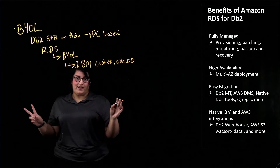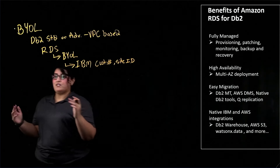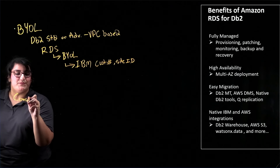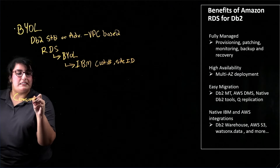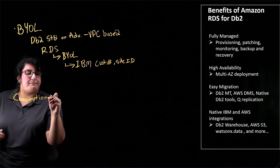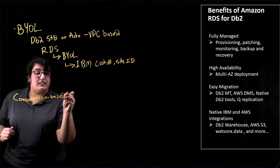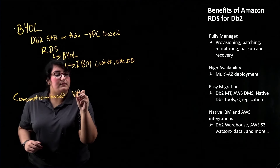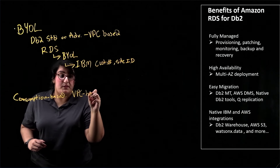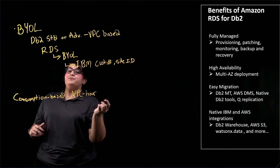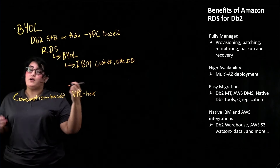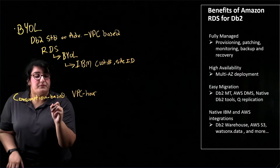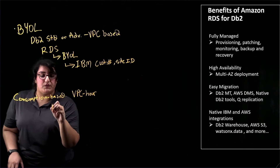Our second option is our consumption-based option. This is an hourly option on a VPC per hour basis. To get to our consumption-based VPC hour licenses, you again go to the RDS console.